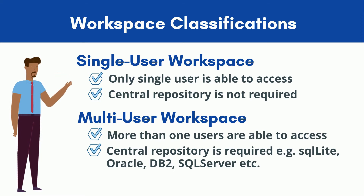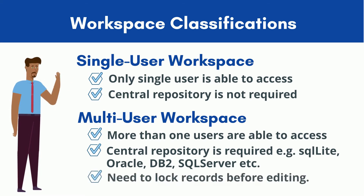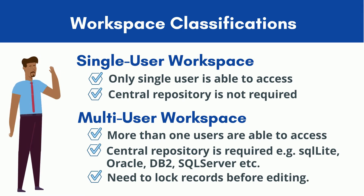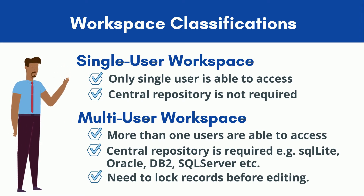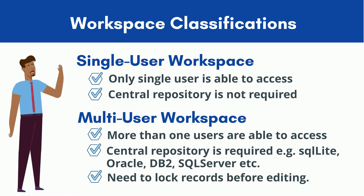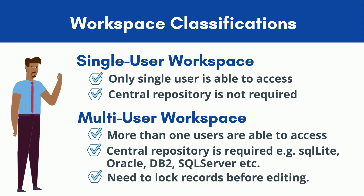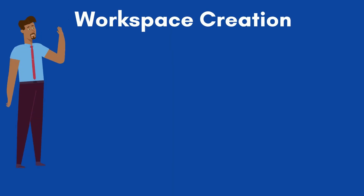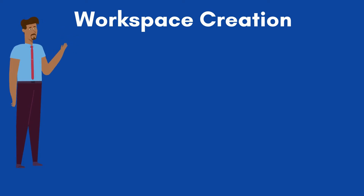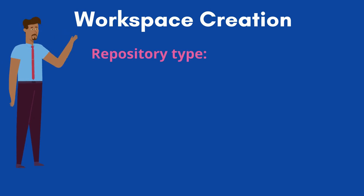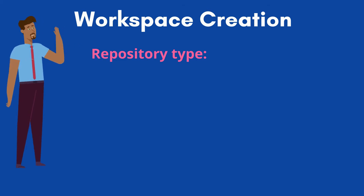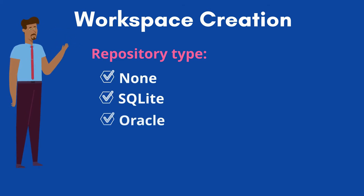In the multi-user workspace, data management is simpler as data are stored in shared databases, known as common repositories. To perform any transaction — add, edit, or delete — we need to lock the corresponding records first. This restricts other users from manipulating the same records. After completing the transaction, we need to unlock the records. In Tosca, locking data is known as checkout and unlocking is known as check-in. Before creating a workspace, we need to understand the different values of the repository type field, which determines whether a single or multi-user workspace is created.